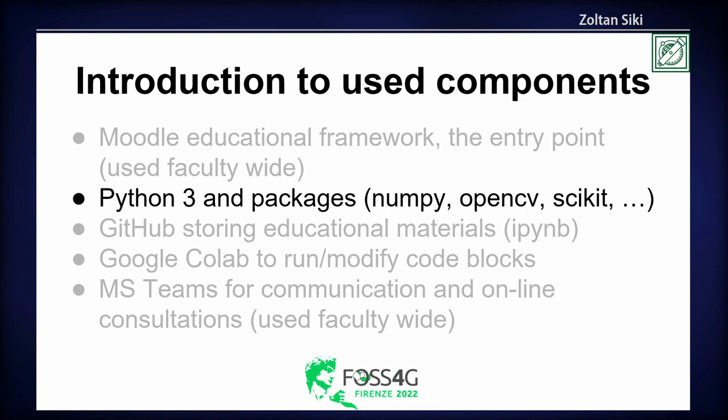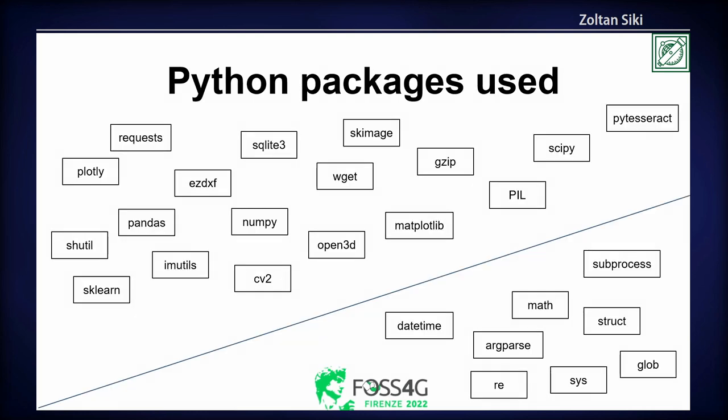For Python 3 and Python packages, we use a lot of packages. When I collected all the packages we used while preparing this presentation, I was shocked — we used so many. But the philosophy is to find a ready solution and put it in our program. Below the line are standard Python packages; above the line are non-standard ones. Fortunately, Colab has many of them pre-installed, and only a few need to be installed manually — which is also possible on Colab.